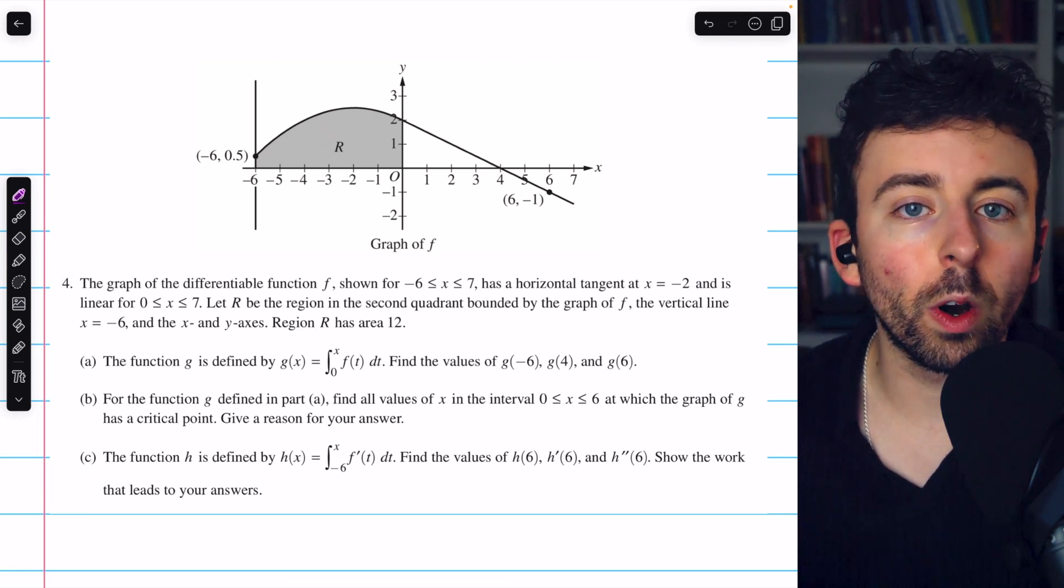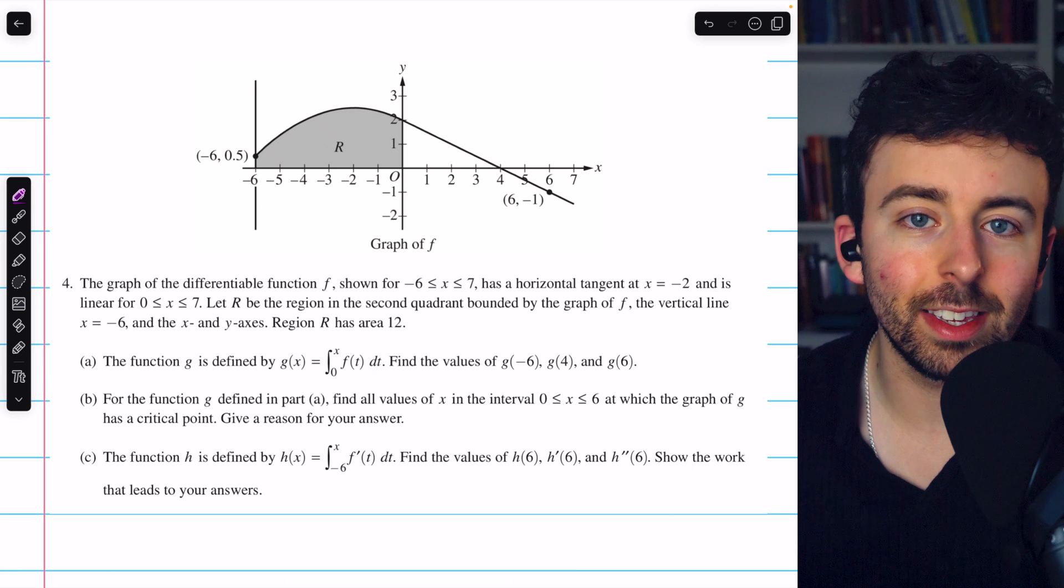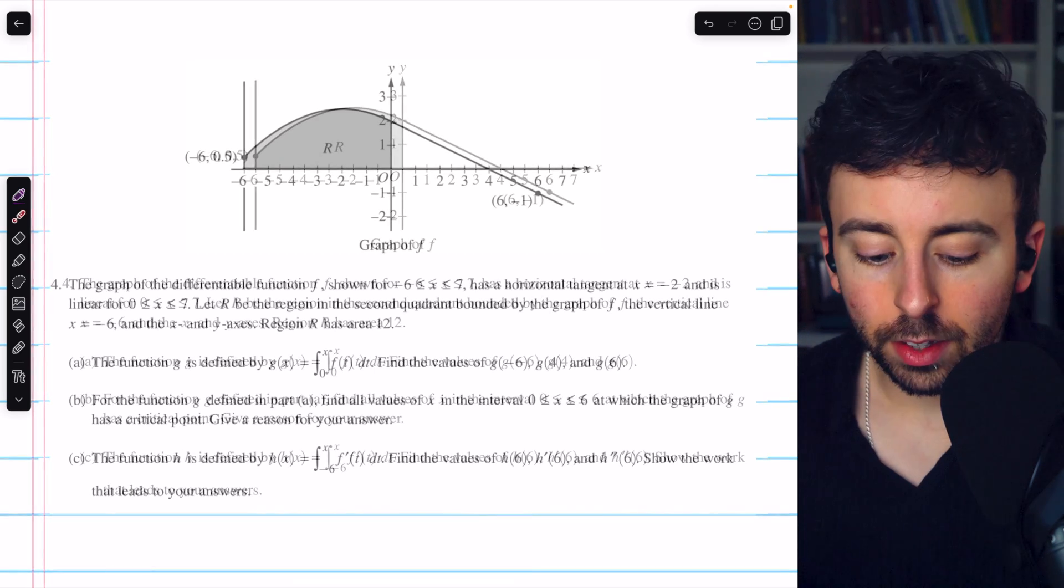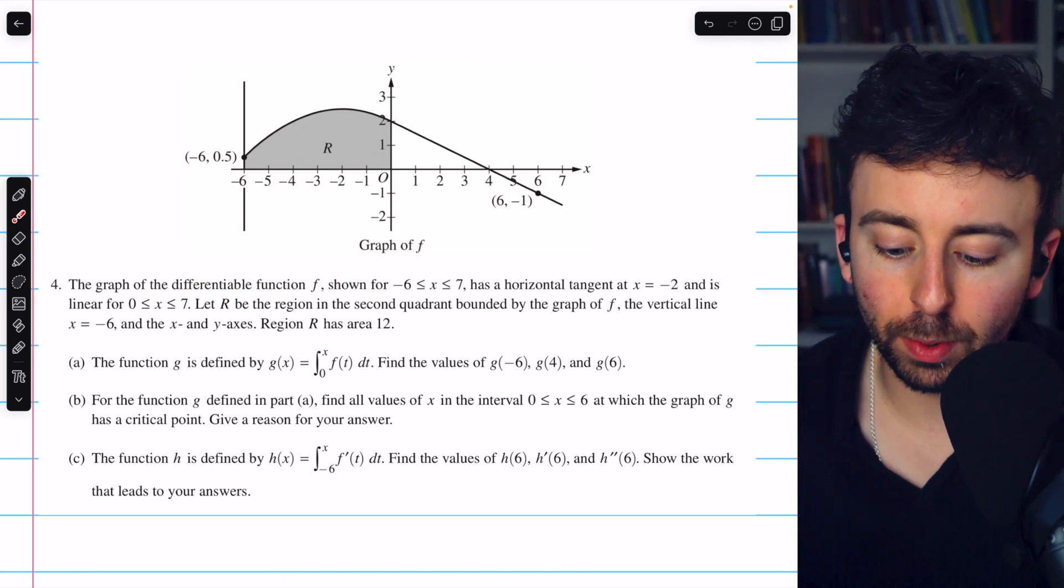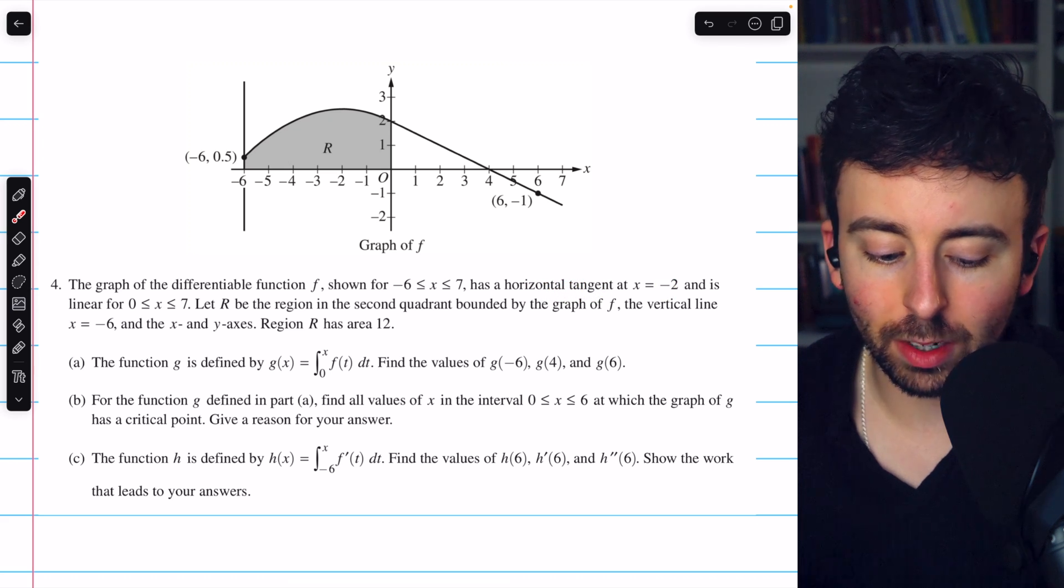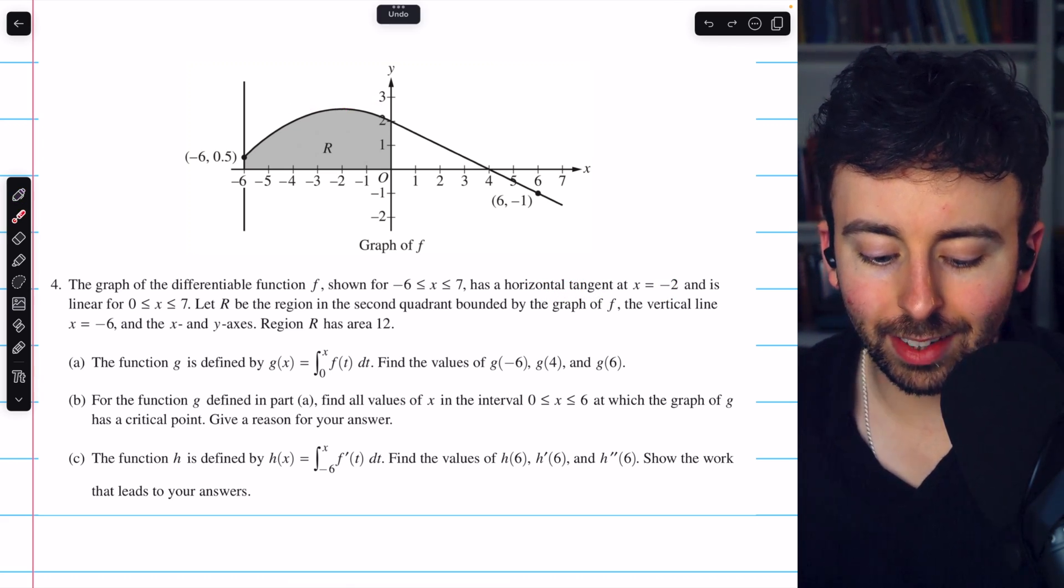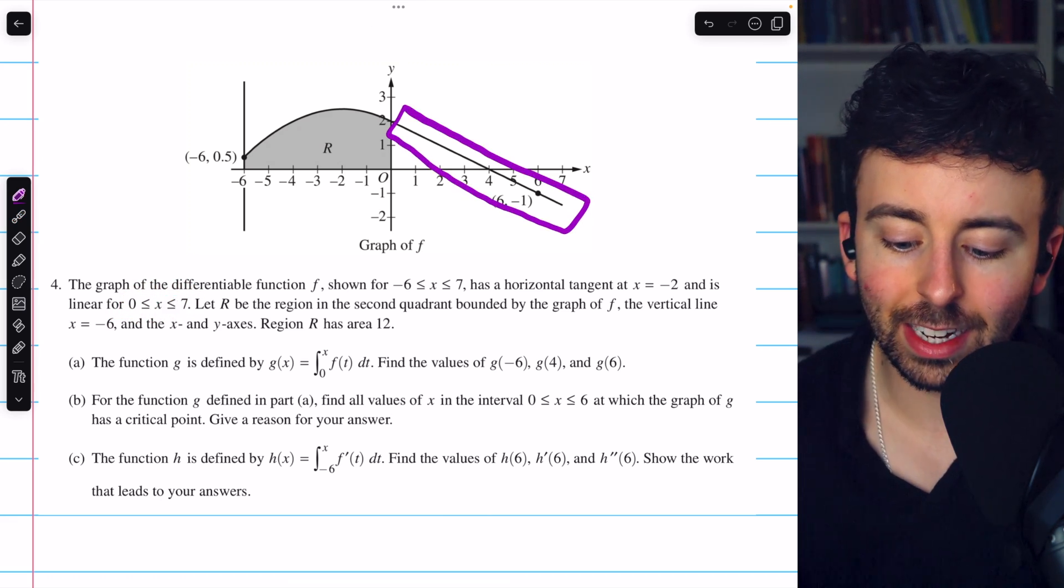This is free response question 4 from the 2024 AP Calc AB/BC exam. This is part of the no calculator section. The graph of the differentiable function f shown for x between negative 6 and 7 has a horizontal tangent at x equals negative 2, which we can kind of see there, and is linear for x between 0 and 7. So that's over here. It looks linear.